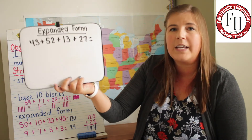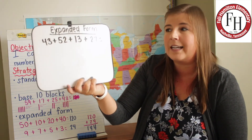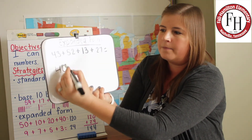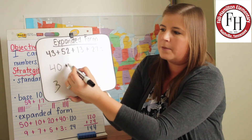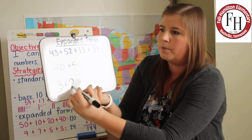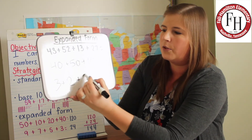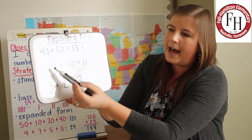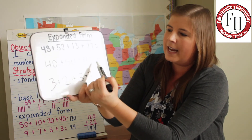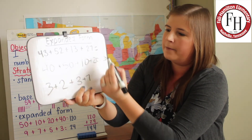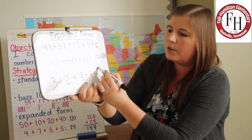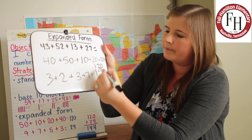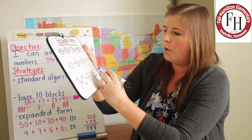The last strategy is using expanded form. First, I'm going to write all of these numbers in expanded form, grouping them by tens and ones. 43 in expanded form is 40 plus 3. 52 in expanded form is 50 plus 2. 13 in expanded form is 10 plus 3. 27 in expanded form is 20 plus 7. Now I'm going to add up my tens: 40 plus 50 plus 10 plus 20 equals 120. Then 3 plus 2 plus 3 plus 7 equals 15. I'm not done yet — I now need to add 120 plus 15. When I add that up, that makes 135.